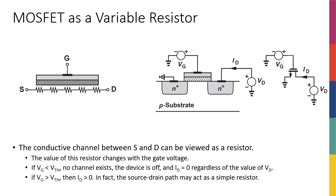In a sense, we can think of the channel under the gate as a distributed resistor. We have this transistor with a channel of free electrons whose density depends on the gate voltage. The moment we have them, if I apply a voltage on the drain while keeping the source at zero, I'm going to have a current because those free electrons are going to help carry that current.